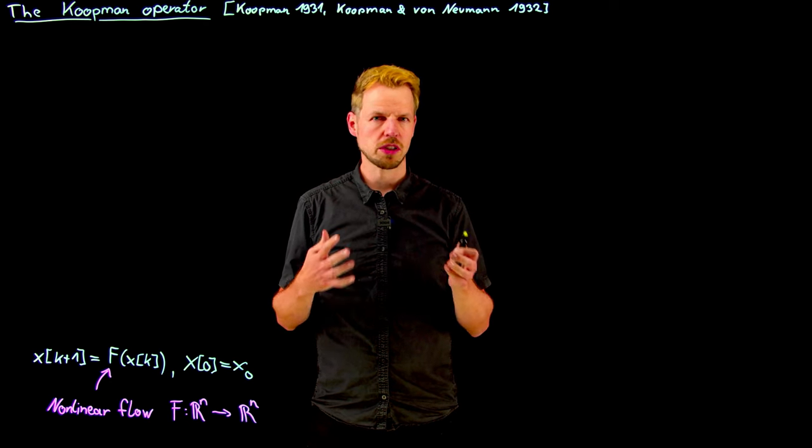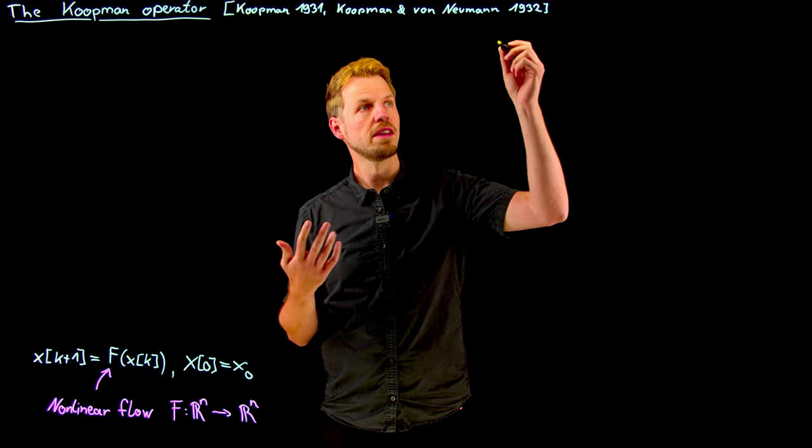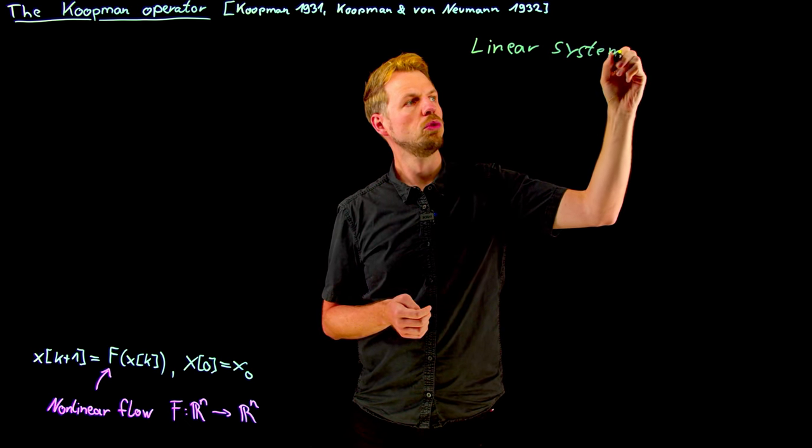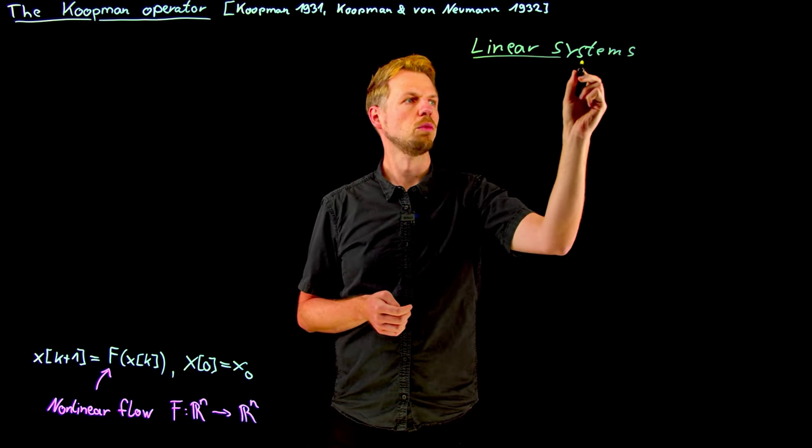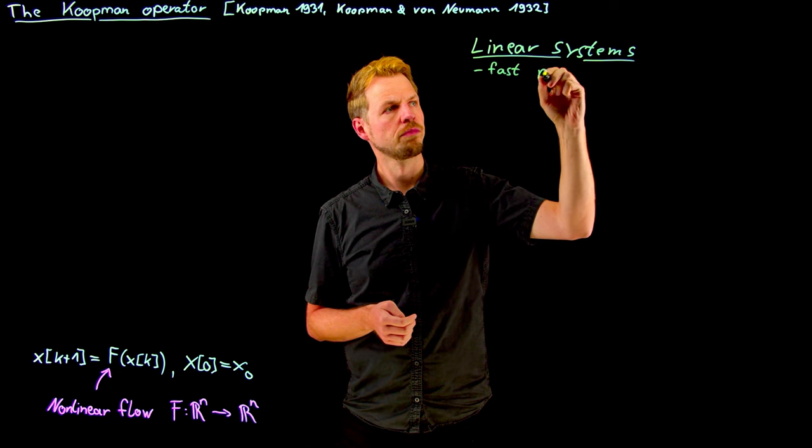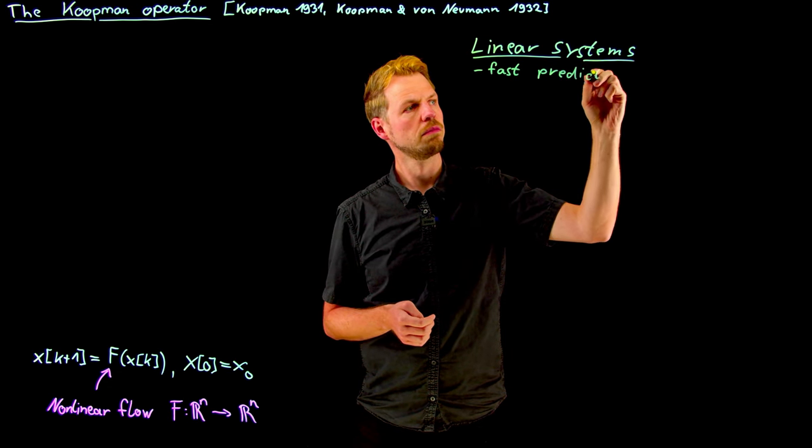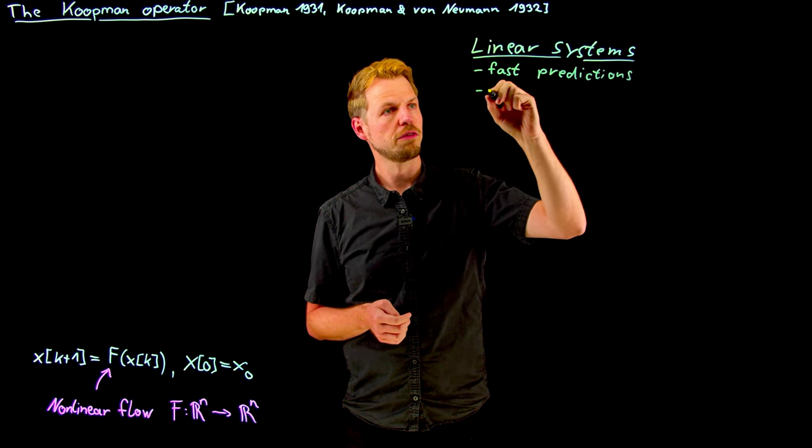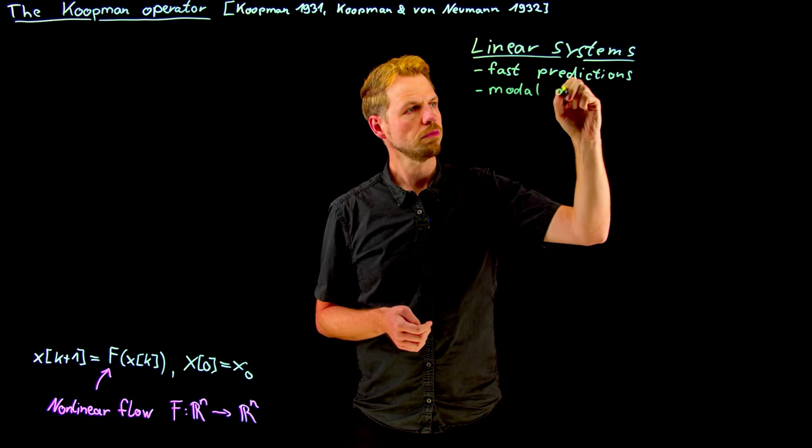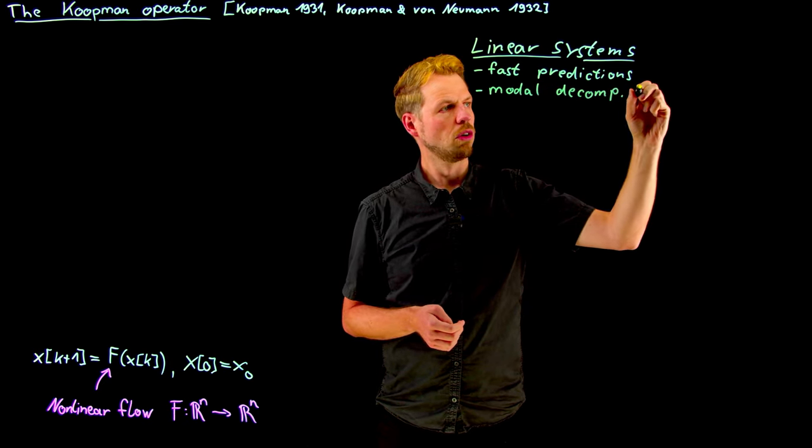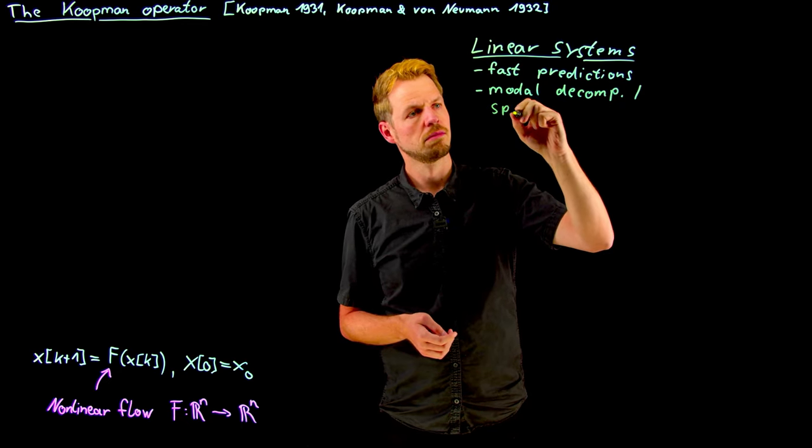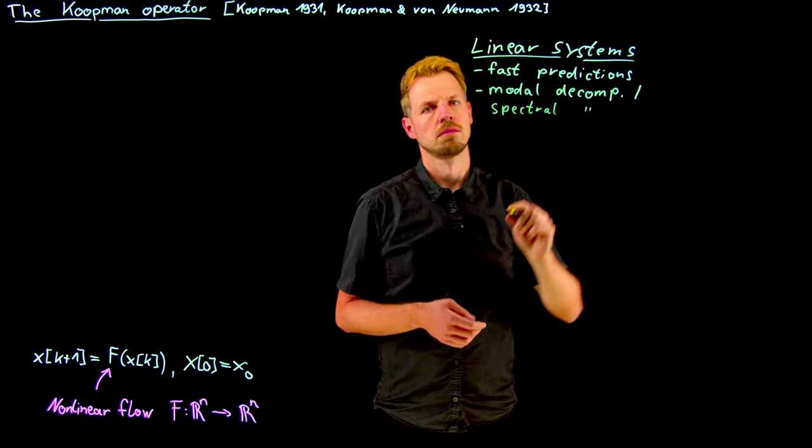And we know that linear systems are much, much easier studied. So why is that? If we consider linear systems, then this is due to several reasons in fact, but we can summarize this in the sense that we have fast predictions. So they're usually easy to simulate. And we have modal decomposition or what can also be cast as spectral decomposition.